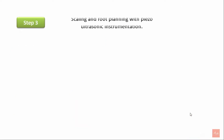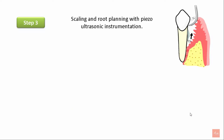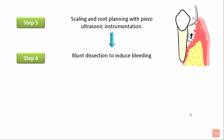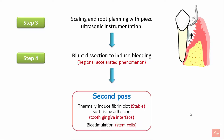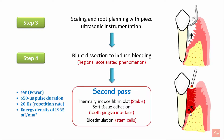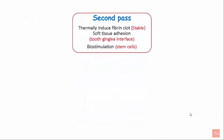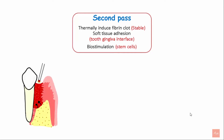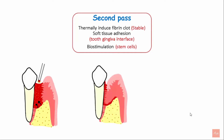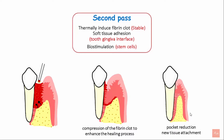The next step involves scaling and root planing with a piezoelectric ultrasonic instrument. This is followed by blunt dissection to induce bleeding, a mechanism called the regional acceleratory phenomenon. This is followed by the second pass, where laser settings remain the same but the pulse duration is changed to 650 microseconds. The purpose of the second pass is to create a stable fibrin clot, which allows for soft tissue adhesion and biostimulation of stem cells. The fibrin clot also achieves enhanced healing, prevents bacterial infiltration into the tissue, and prevents epithelial downgrowth, ultimately leading to pocket reduction and new attachment.